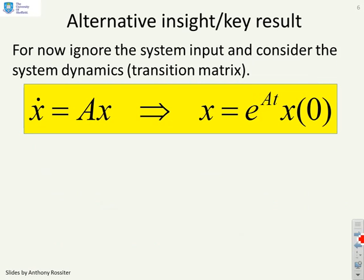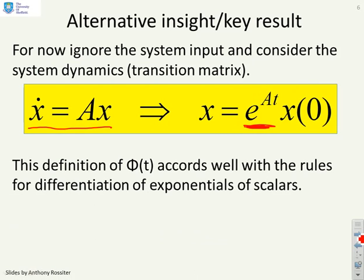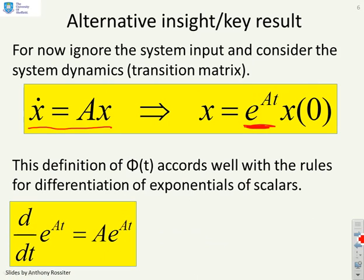Let's have a look at an alternative insight. If we ignore the system input again, so we're just going to look at the equation x dot equals Ax, and we're going to assume that we can write the solution as e to the At x of zero. This definition accords well with the rules of differentiation of exponentials of scalars. So what we're saying is, if I assume that the derivative of e to the At is A e to the At, then clearly this means the solution I've written satisfies that equation.